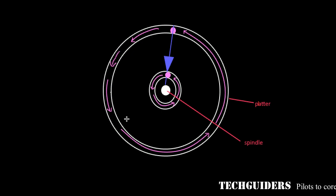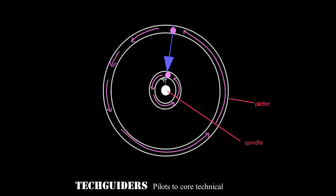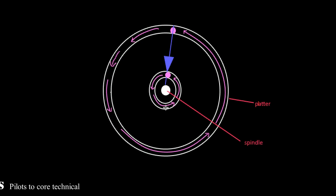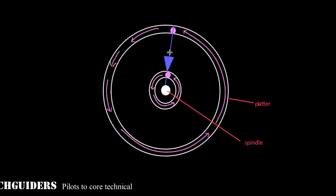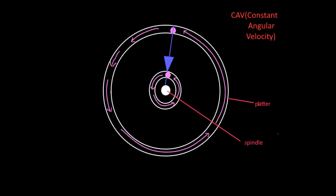Because the length of the outer track is longer than that of the inner track, for both points to complete one revolution in the same time, the outer point must be moving faster. This is because hard disks rotate with constant angular velocity. To maintain this constant angular velocity, the linear speed of the outer tracks must be higher than that of the inner tracks.